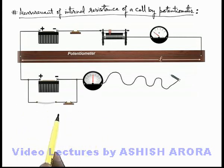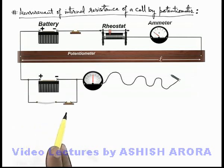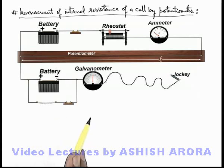In the primary circuit, the battery, rheostat, and ammeter are connected. In the secondary circuit, we have a battery which is connected with a galvanometer and a jockey.